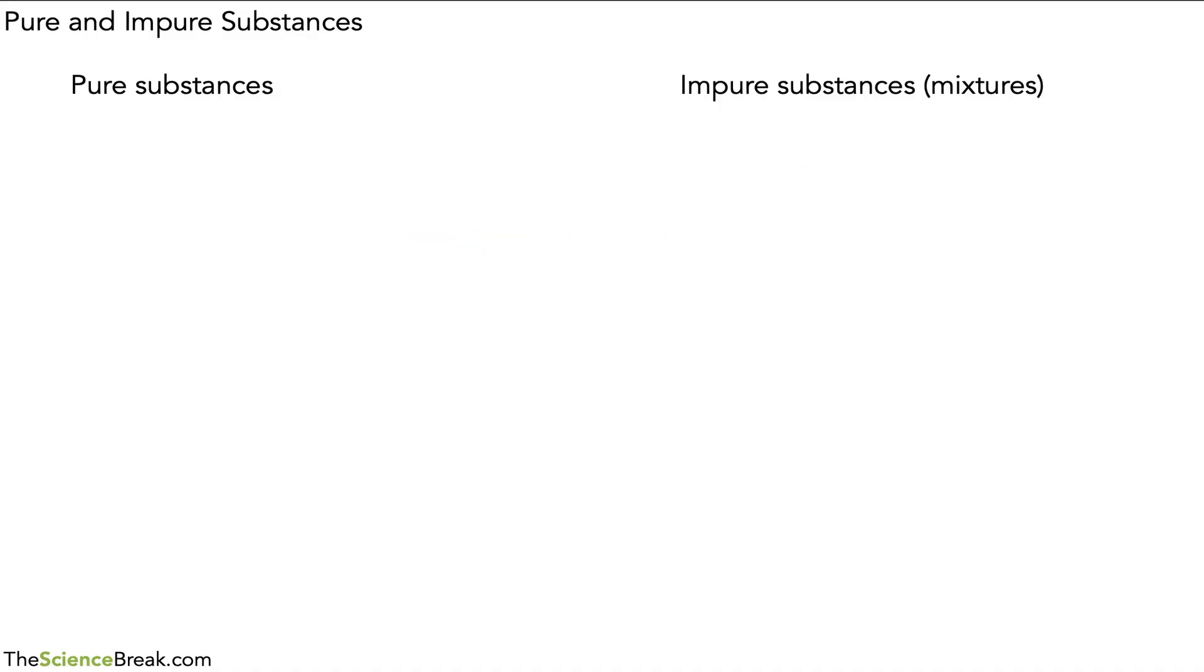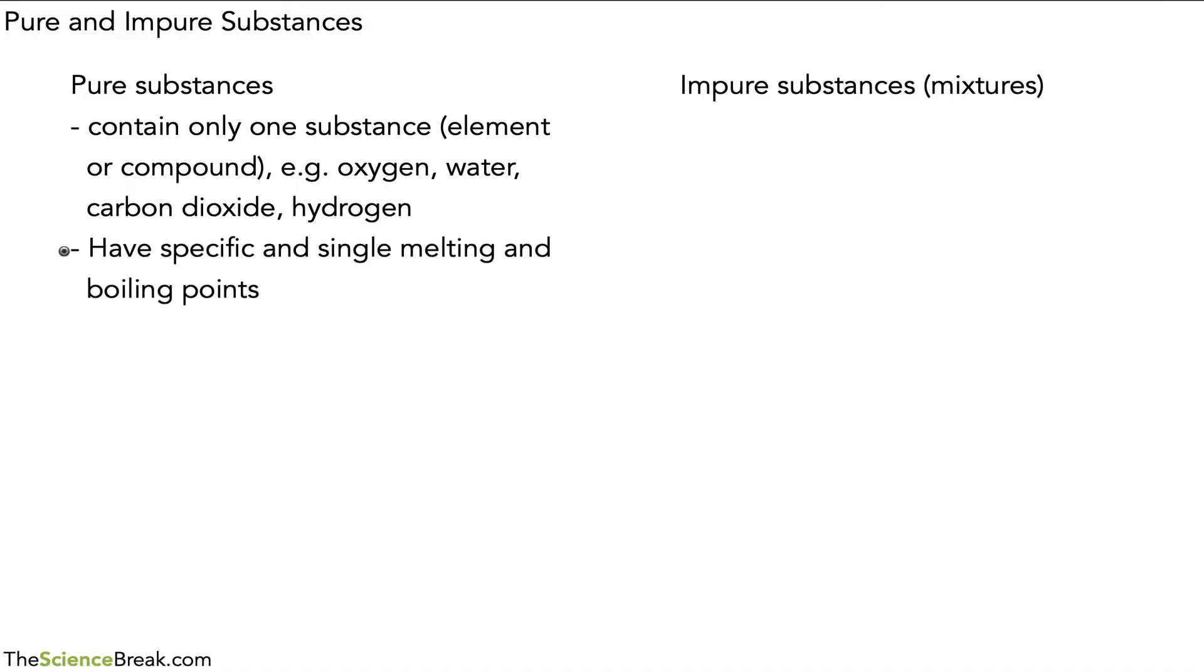So let's summarize what we have learned in this video. For pure substances, these contain only one substance or material which could be an element or a compound, for example oxygen, water, carbon dioxide, or hydrogen. So these are examples that are different but still pure. Remember they have specific and single melting and boiling points, and this means that they only boil at a very specific temperature and melt at a specific temperature, and we had a graph that looked like this to help us understand that idea.